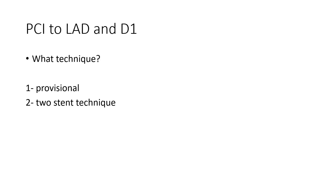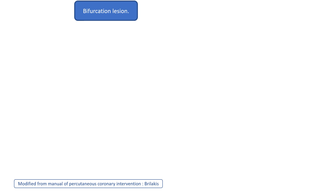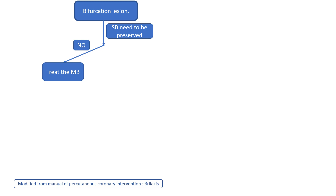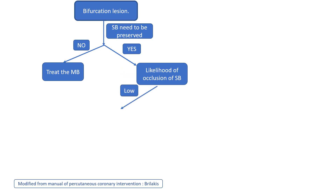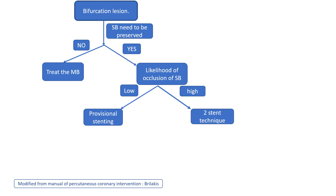Now we have a true bifurcational lesion that needs to be dealt with. The question is what technique — provisional or two-stent technique? Whenever we face a bifurcational lesion, we need to answer a few questions apart from Medina classification. First, about the side branch: whether it needs to be preserved or not. If not, we treat the main branch. If the side branch needs to be preserved, we ask about the likelihood of occlusion. If there is no likelihood of occlusion, we go for provisional stenting of the main branch, and if anything is needed, then we can go for stenting of the side branch. If from the beginning there is a high likelihood of occlusion of the side branch, then we go for a two-stent technique.